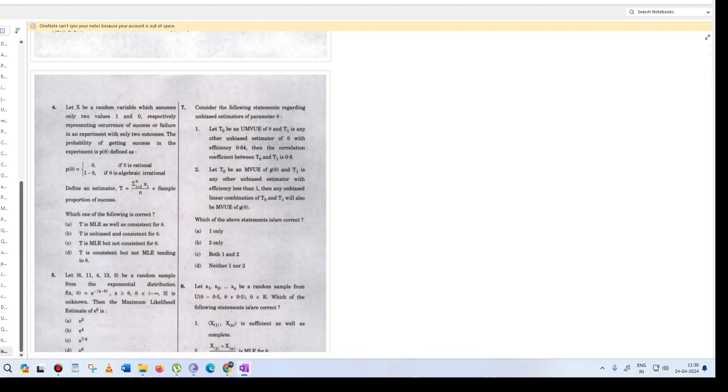Let's go to question number 4. Let x be a random variable which assumes only two values 1 and 0 respectively. The probability of getting success in the experiment is given and define the estimator t. Which one is correct: MLE, unbiased estimator, MLE consistent, or MLE tending to theta?